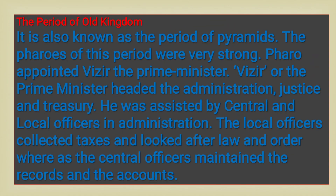The period of old kingdom is also known as the period of pyramids. The Pharaohs of this period were very strong. The Pharaoh appointed a Vizir — the prime minister — who headed the administration, justice and treasury. He was assisted by central and local officers. Local officers collected taxes and looked after law and order, while central officers maintained records and accounts.